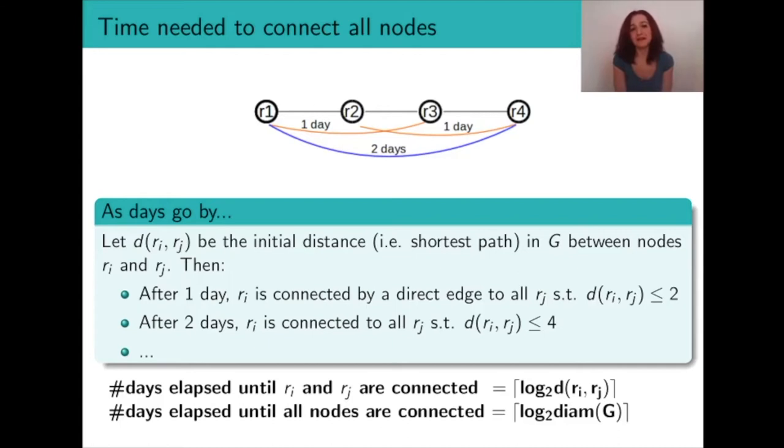You will notice that after one day ri will get directly connected to all the nodes that were within a distance of at most two from it initially. And then after two days it's going to get connected to all the nodes that were within a distance of at most four. After three days this is going to go up to a distance of at most eight, and so on and so forth.